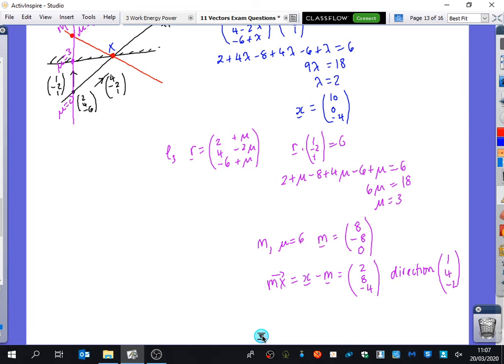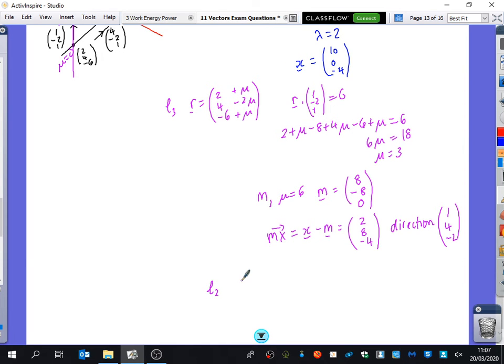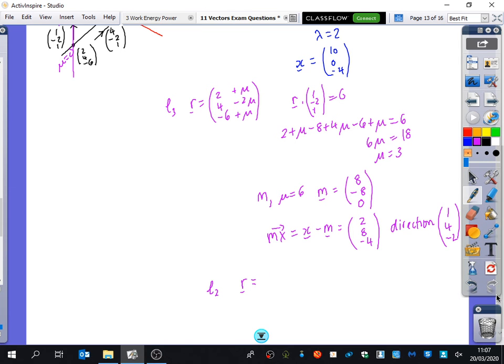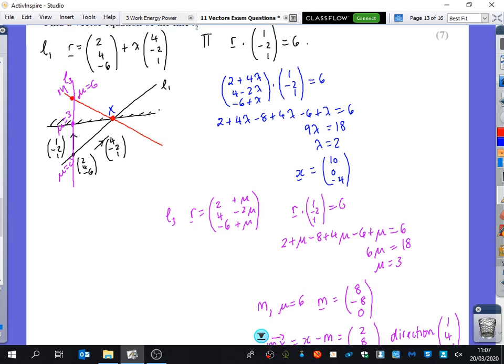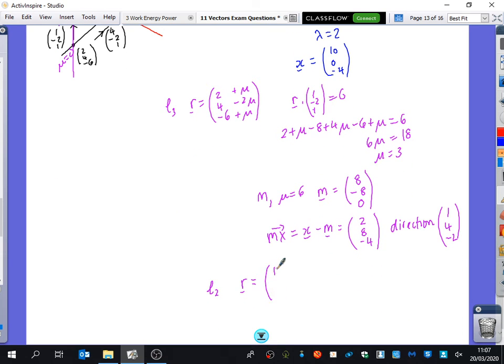So the equation of the line L2 is R equals a point that is on the line. So you could either use M or you could use x. I think the mark scheme used x, which was (10, 0, minus 4). And we're now going to have to use another variable because we've already used λ and μ. And I'm going to use t(1, 4, minus 2) for that reflection.